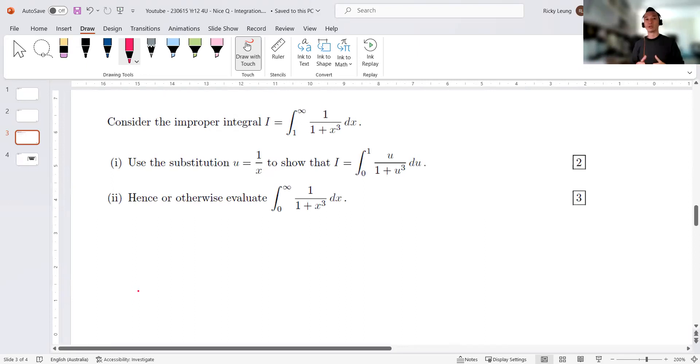Part one says use the substitution u equals 1/x to solve that. Okay, and then hence use it. Not too bad. Let's dive right in. All right, so we have I currently equal to that guy, limit of 1 plus x cubed.